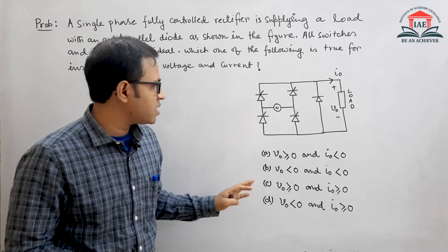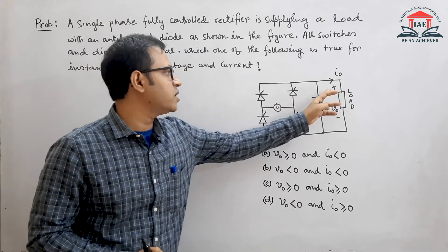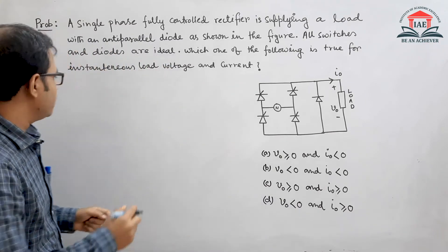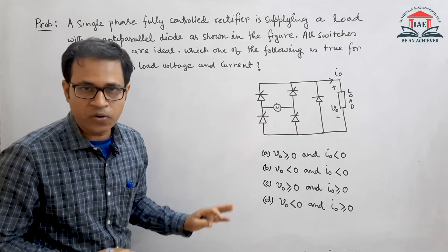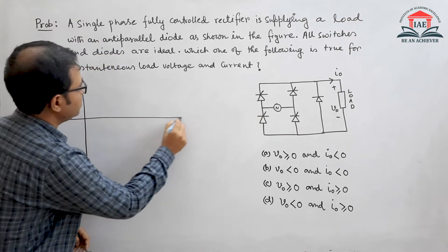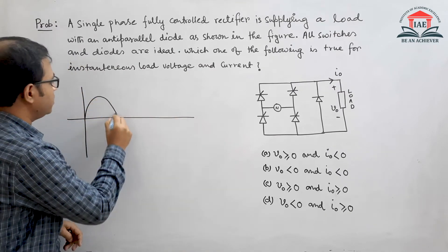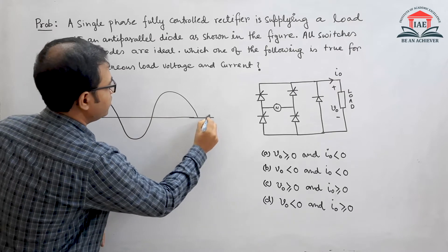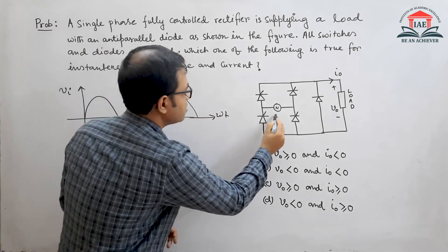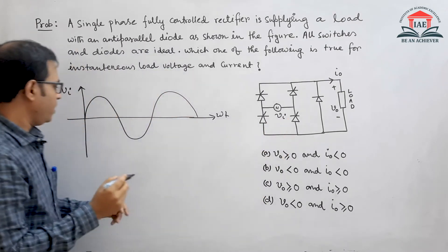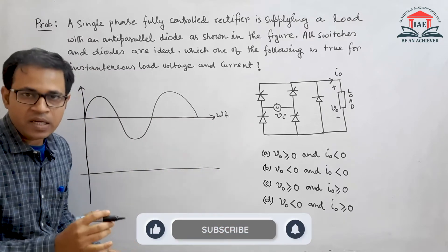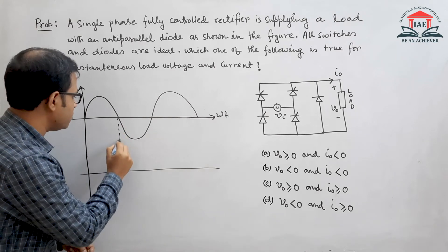We can't find out which option is correct if we do not draw the output voltage of this rectifier. So let's draw the output voltage. To do that, first we have to draw the input voltage. Then we have to mark the zero crossing points on the waveform.